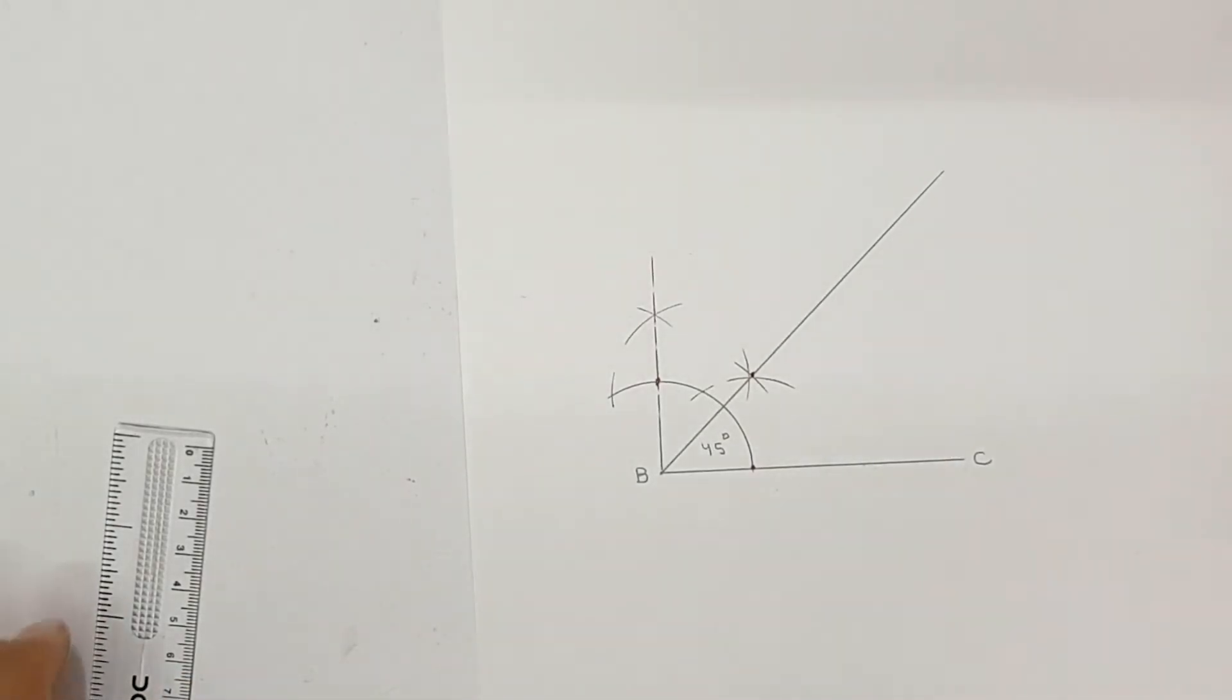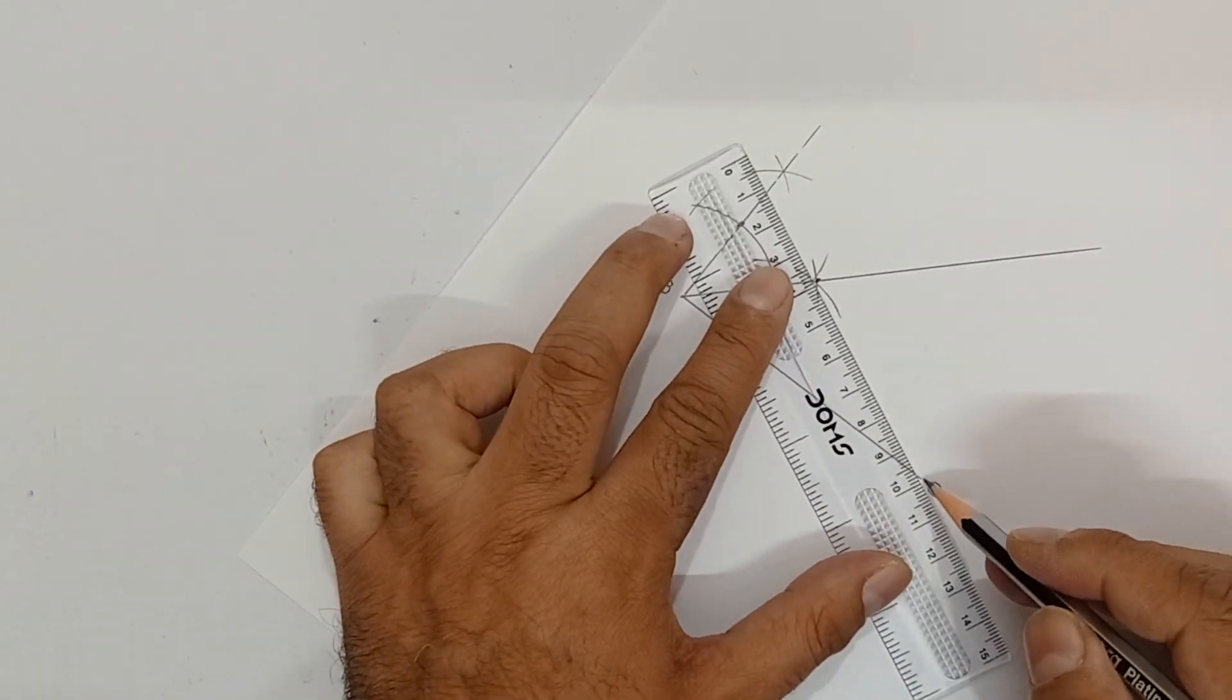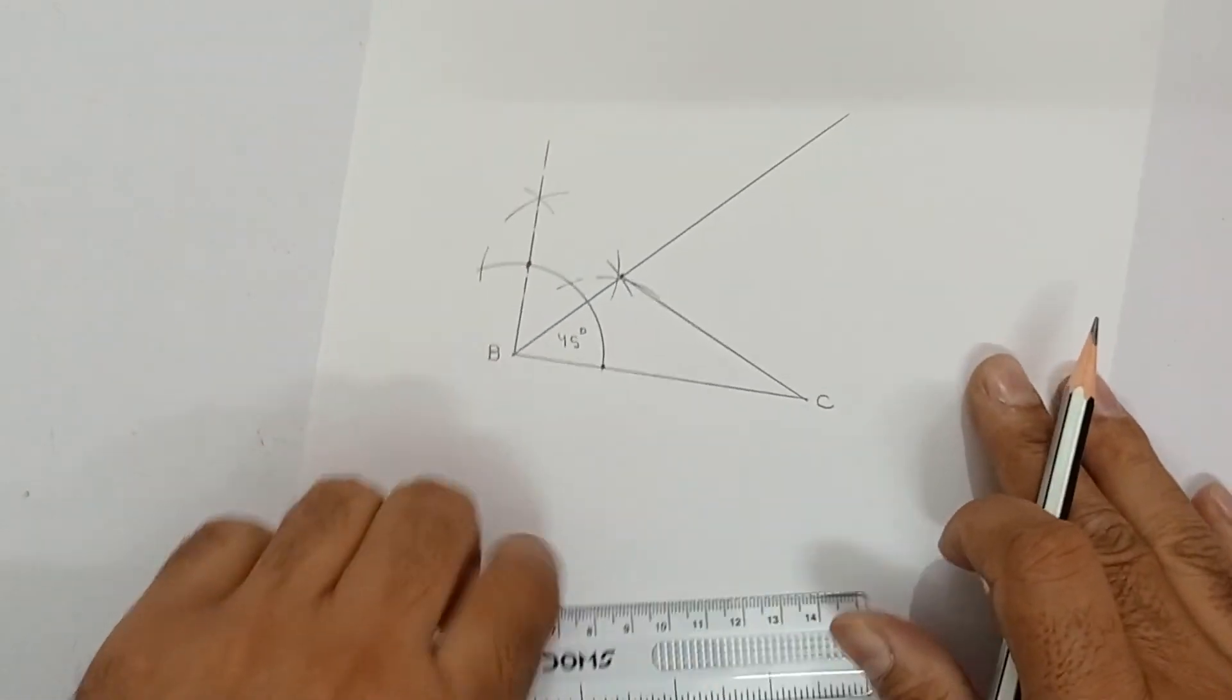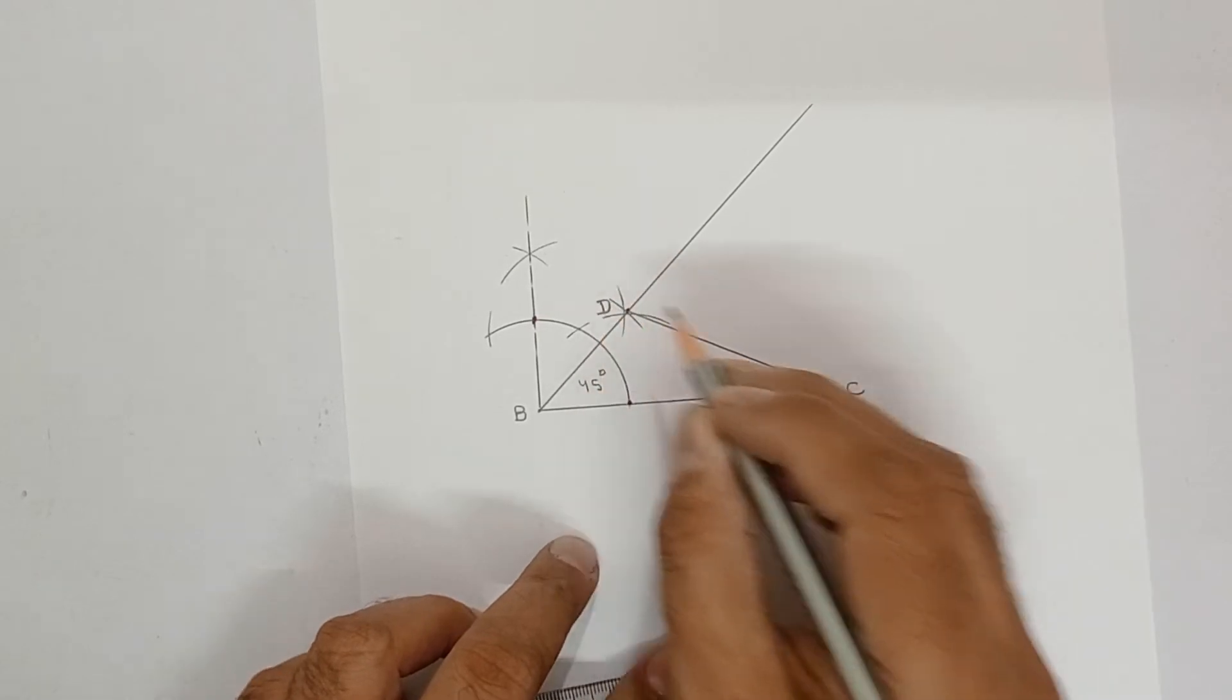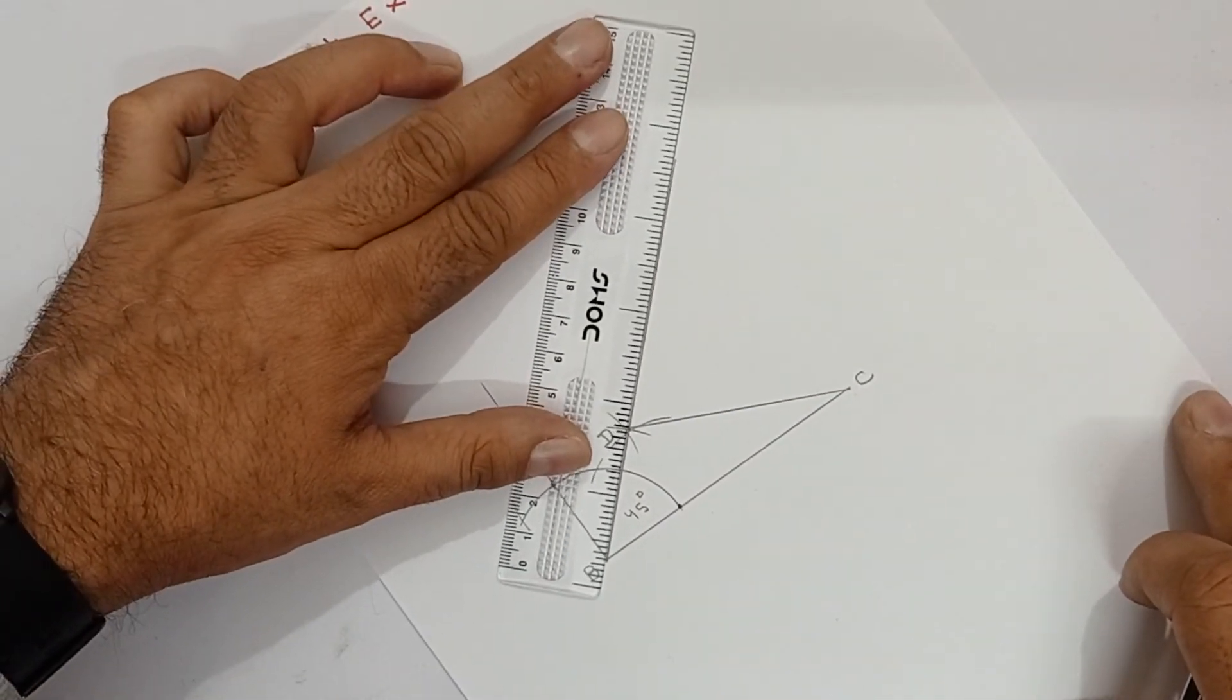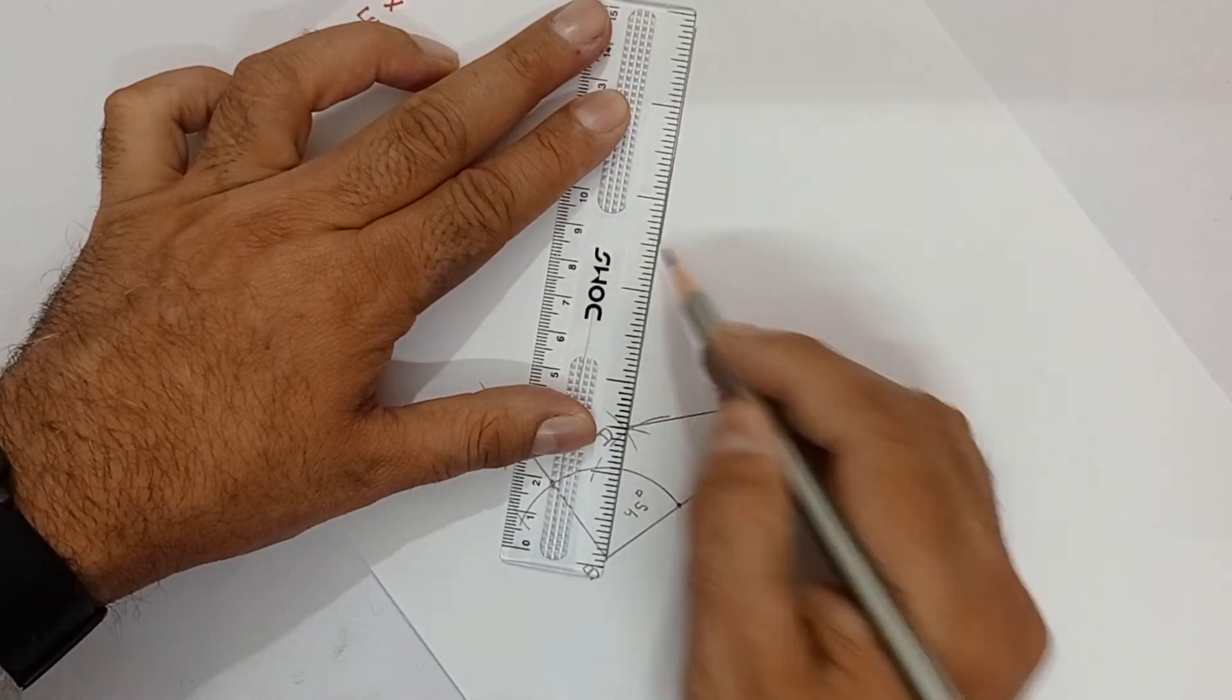You have to join this with C. Keep here and join like this. The name of this point you can give D. You can extend this line a bit more, that is even better, because construction part will be made this side only.